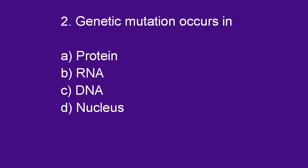Next question: Generating mutation occurs in DNA. Option C is right.